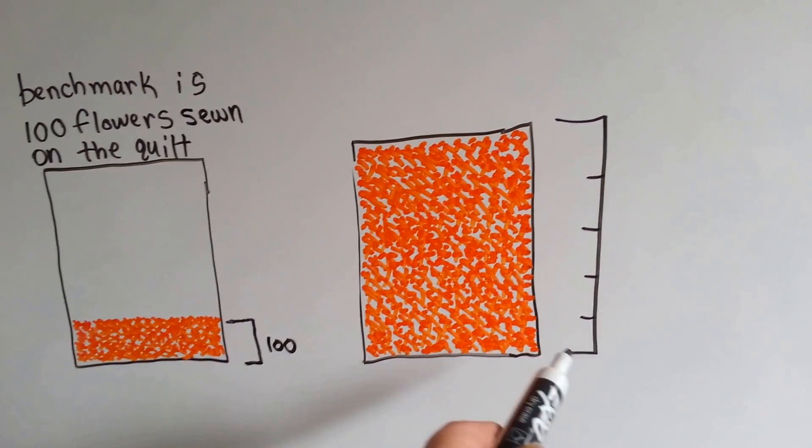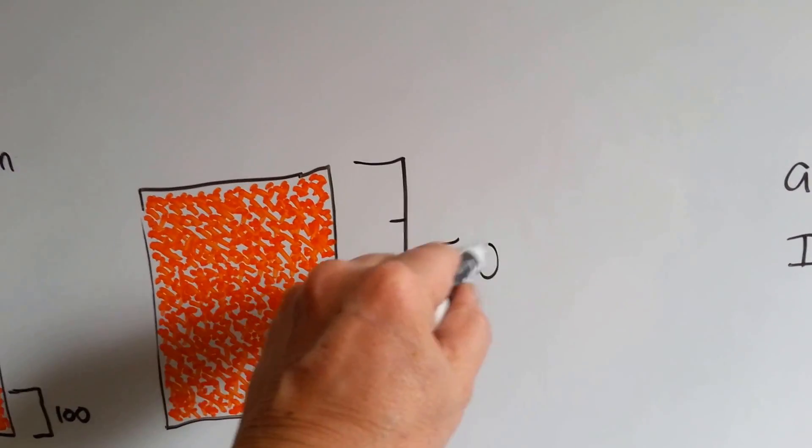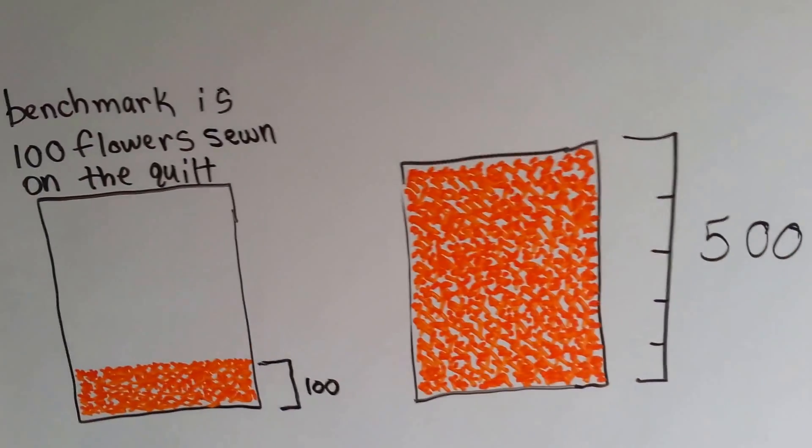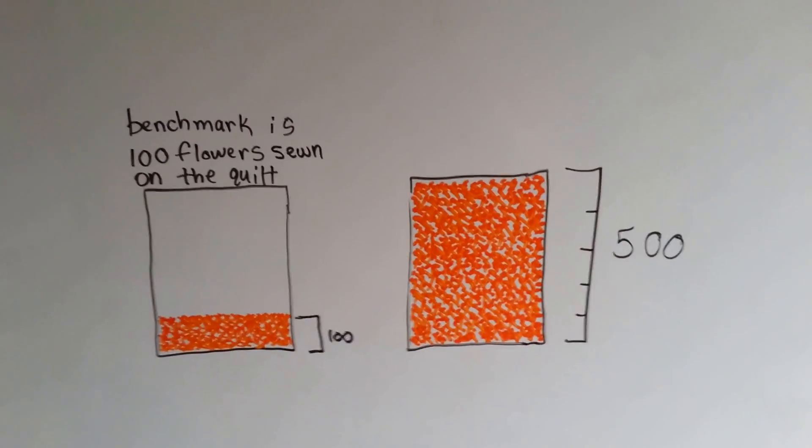If that's 100, then that's 200, 300, 400, 500 flowers. Is there exactly 500 flowers embroidered onto the quilt? Probably not, but it's probably close.